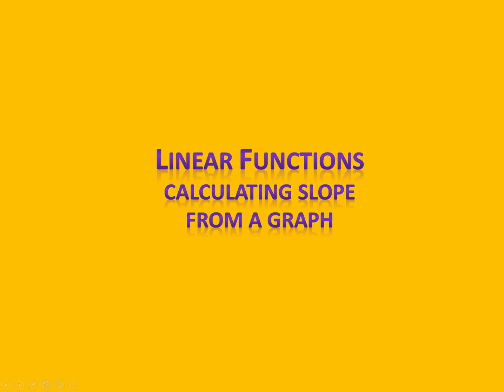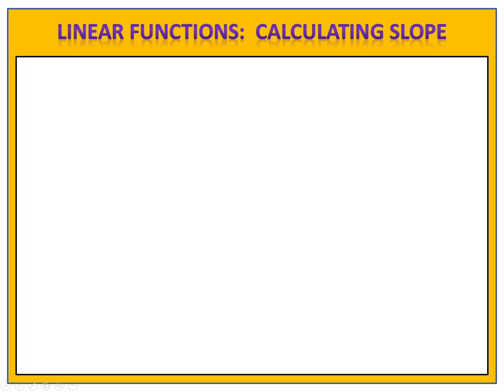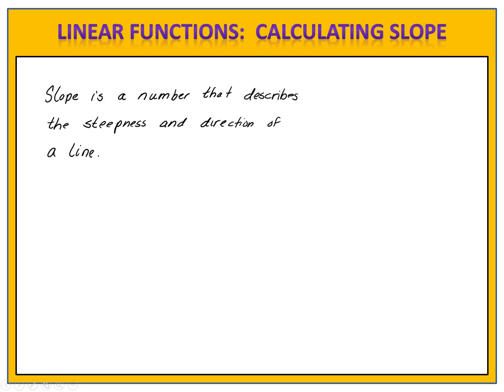In this lesson, we're going to learn how to calculate the slope of a linear function by looking at the function's graph. Let's begin by reminding ourselves what slope is. Slope is simply a number, and that number describes the steepness and the direction of the line. Simply put, slope is change in y over change in x.